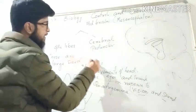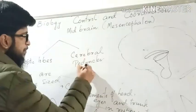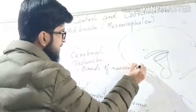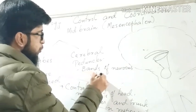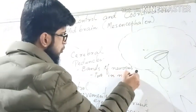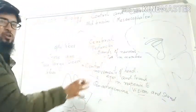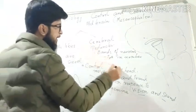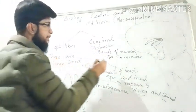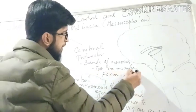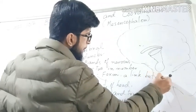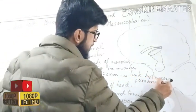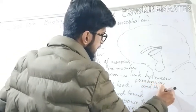Another part of the midbrain is cerebral peduncles. Cerebral peduncles are bands of neurons — yeh neurons ke bane hue bands hain — and they are two in number. Yeh sara structure diencephalon ke neeche hota hai, hidden under the cerebral hemisphere. Their function: they form a link between the forebrain (prosencephalon) and the hindbrain (rhombencephalon).